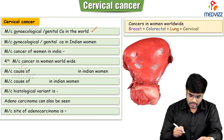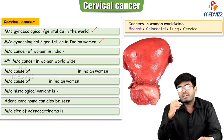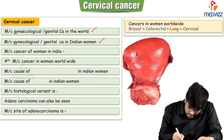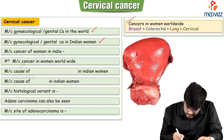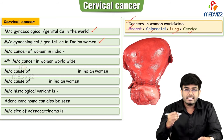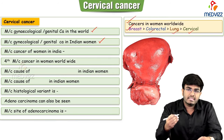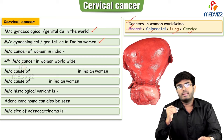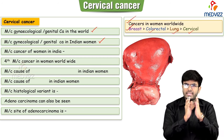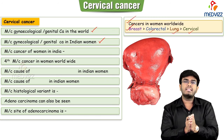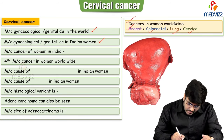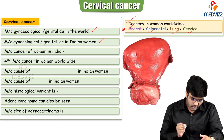Please note: cervical cancer is the most common gynecological or genital cancer in the world and also in Indian women. But if someone asks what is the most common cancer in women worldwide, the order is: breast cancer is first, followed by colorectal, lung, and then cervical cancer. So cervical cancer is the fourth most common cancer in women worldwide.